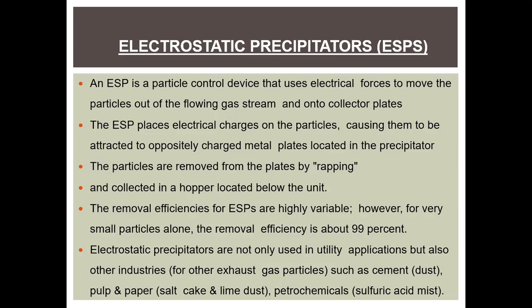Next are electrostatic precipitators, also known as ESPs. An ESP is a particulate control device that uses electrical forces to move particles out of the flowing gas stream and onto collector plates. The ESP places electrical charges on the particles, causing them to be attracted to oppositely charged metal plates located in the precipitator. These particles are removed from the plates by rapping and collected in a hopper below the unit. Removal efficiency for ESPs is highly variable; however, for very small particles, removal efficiency is about 99 percent. ESPs are used not only in utility applications but also in industries such as cement, pulp and paper production, and petrochemicals like sulfuric acid.